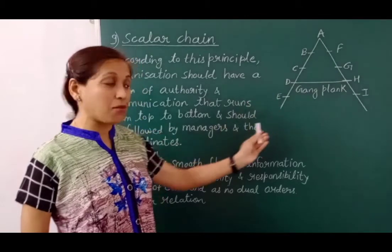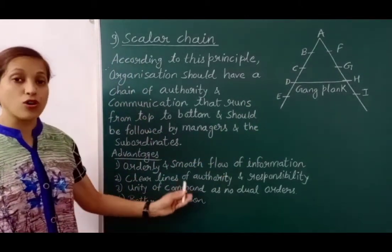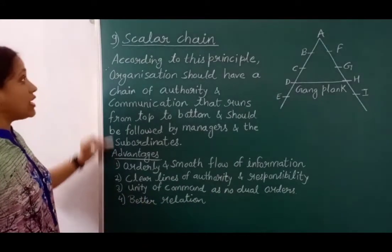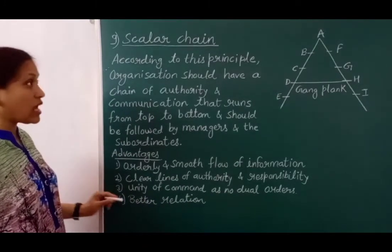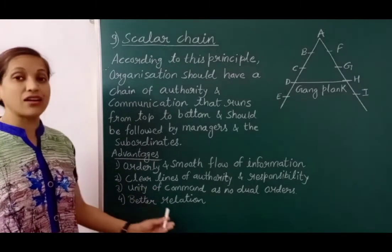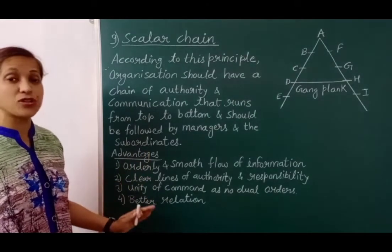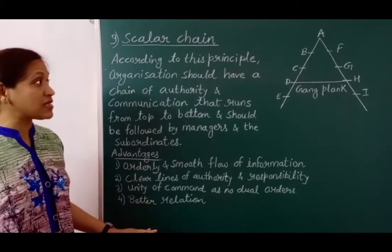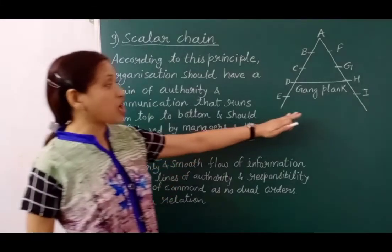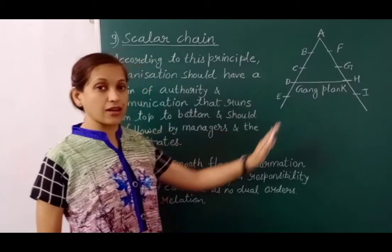This means in the scalar chain, the principle of unity of command is also followed — Mr. E will only follow Mr. D and will never receive orders from two bosses or two superiors. The last advantage is better relations — following the scalar chain maintains better relations among employees and between superiors and subordinates. If this principle is asked in an exam, you need to explain it by describing the flow chart.